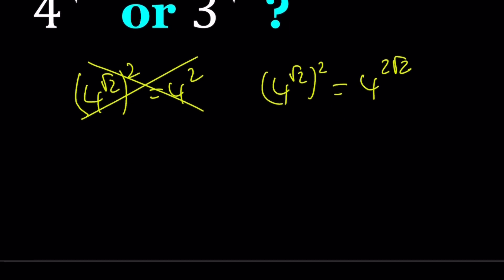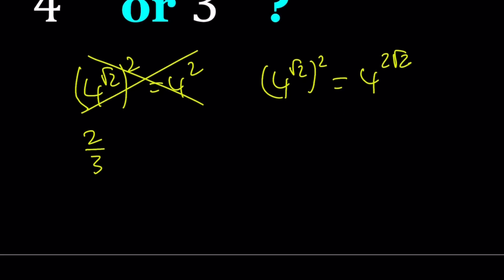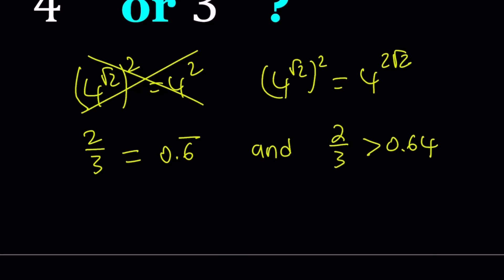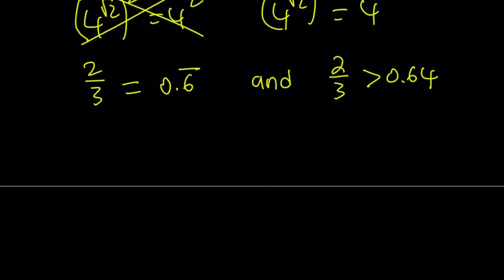Notice that 2 over 3 is 0.6 repeating forever. Because of this, 2 thirds is greater than 0.64. This might come out of the blue — you're going to see when I use these numbers in my solution. If you start with the solution and go back it's easier to reverse, but for those seeing this for the first time it looks very different. Hopefully we all understand that 2 thirds is greater than 0.64.